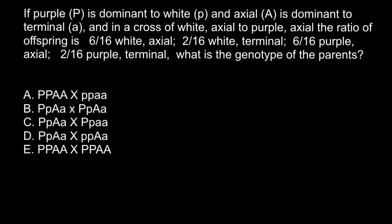Hello and welcome to Nikolai's genetics lessons. Today's problem: we know that purple is dominant to white and axial is dominant to terminal. We crossed two plants and got offspring as follows — 6 out of 16 white axial, 2 out of 16 white terminal, 6 out of 16 purple axial, and 2 out of 16 purple terminal.